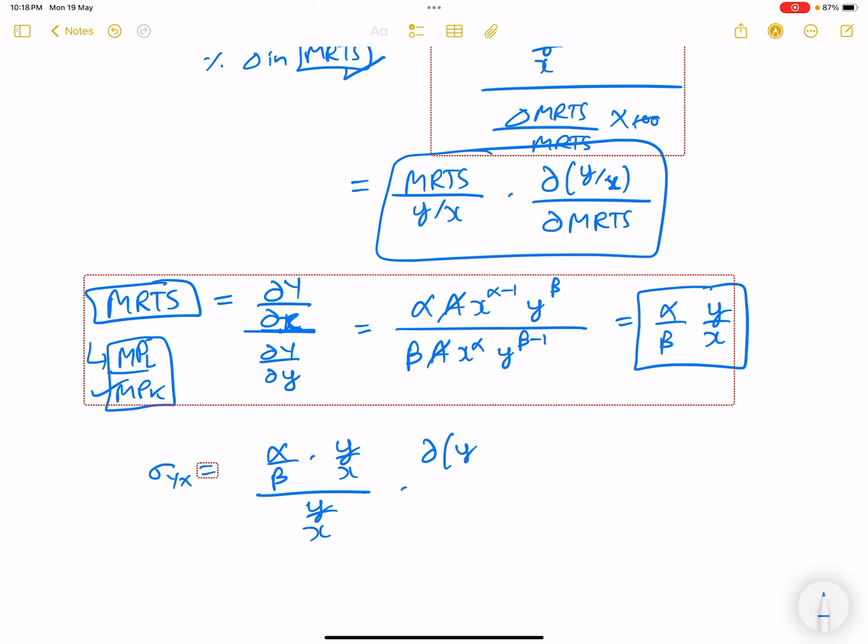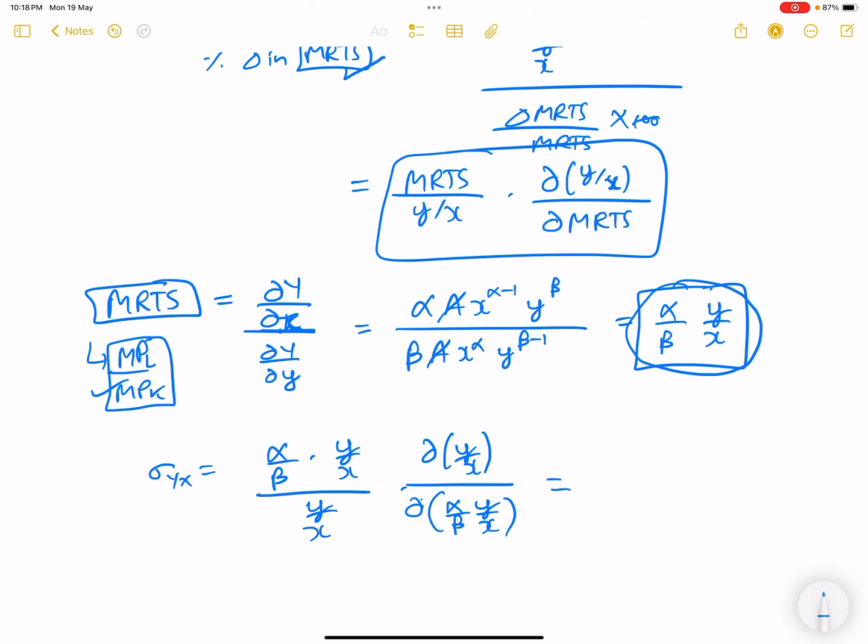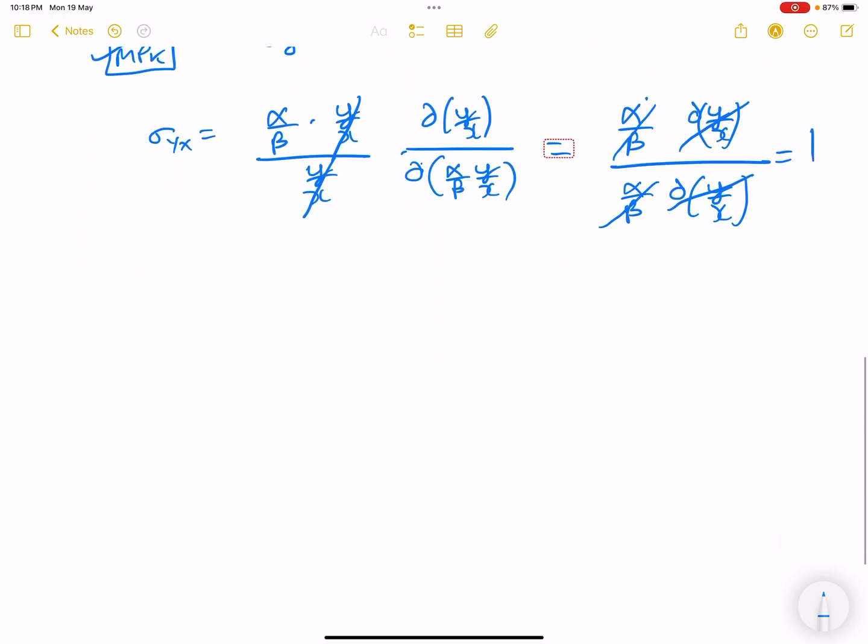And del MRTS, MRTS is this, so derivative of this. Since α and β are constant values, it will come out and cancel. We have α/β y by x, α/β are still constant. This cancels out, this cancels out. So elasticity of substitution is one throughout.